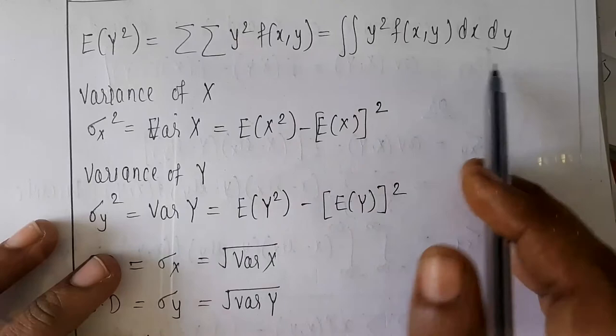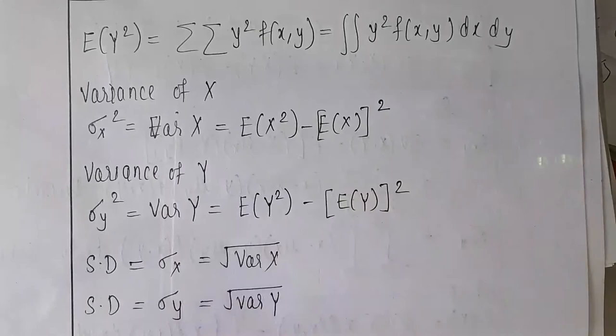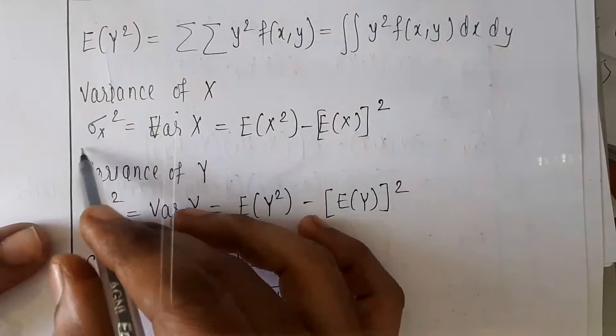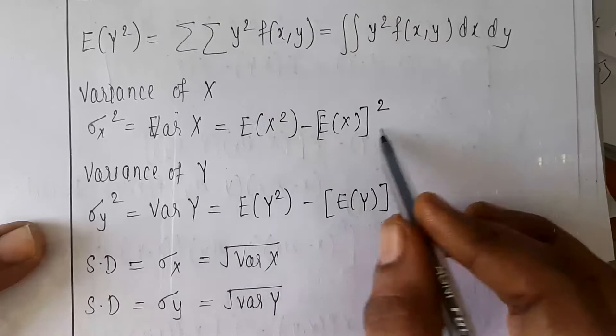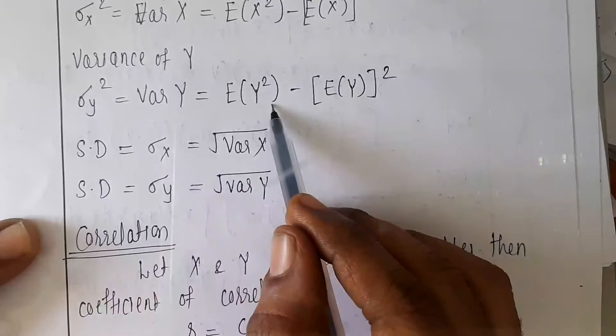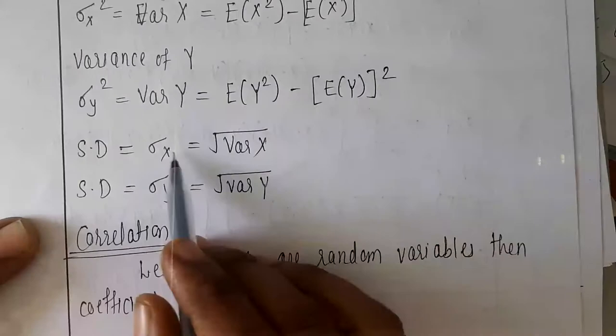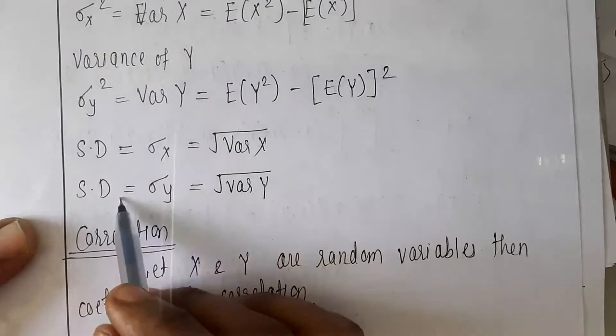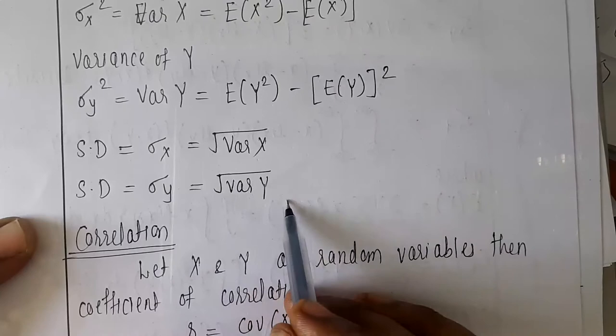The variance of X, denoted sigma_x squared, equals E[X²] minus (E[X])². The variance of Y, sigma_y squared, equals E[Y²] minus (E[Y])². The standard deviation is the positive square root of the variance — for X it is the square root of Var(X), and for Y it is the square root of Var(Y).